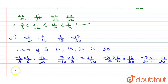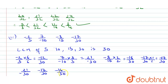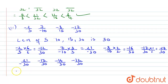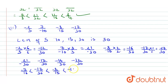We arrange in ascending order. Remember: with negative numbers, the larger the absolute value, the smaller the number. So the order is: 21/(-30), then -17/30, then -16/30, then -12/30. Putting back the original numbers: 7/(-10) < -17/30 < -8/15 < -2/5. This is the answer for the second question.